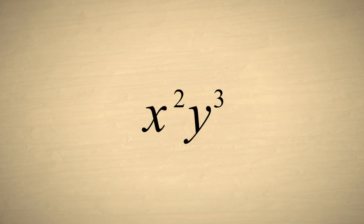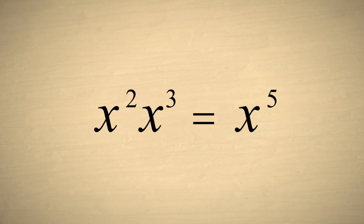On the other hand, when the same variable is used more than once in an expression it is assumed that whatever value it represents is the same throughout the expression. X squared times x cubed can be combined by adding their exponents since both x's represent the same base.